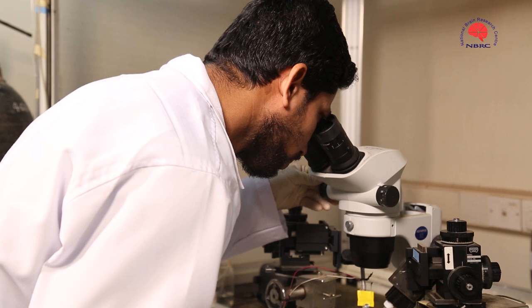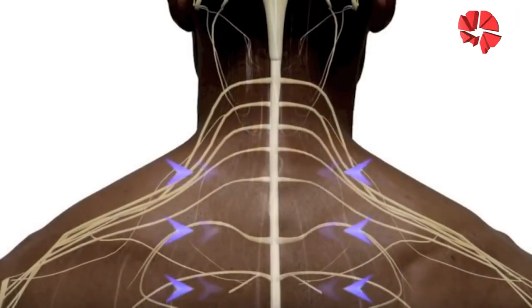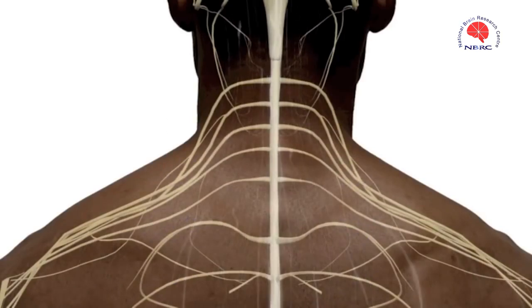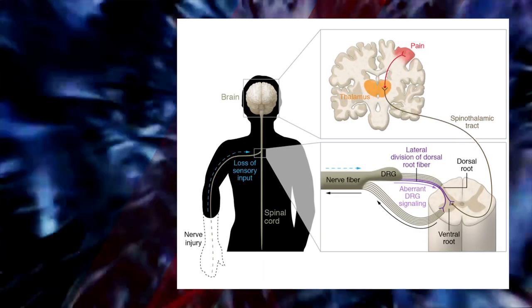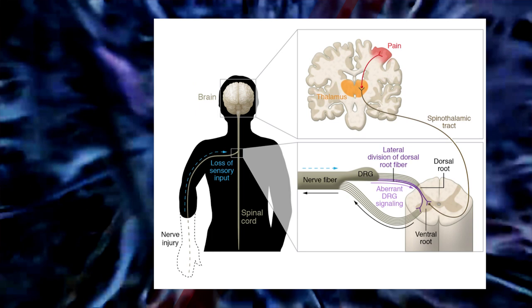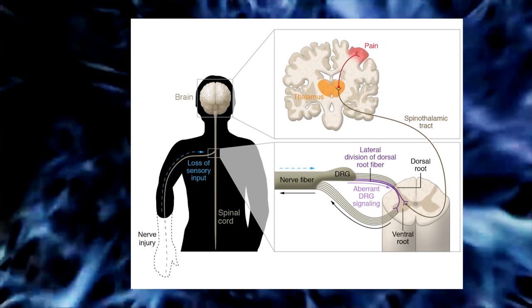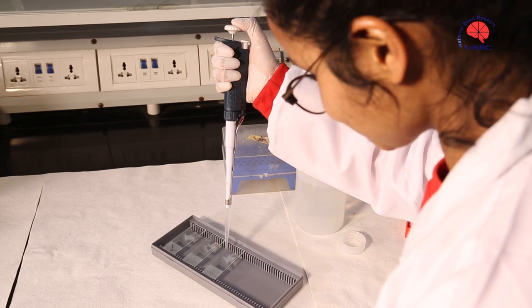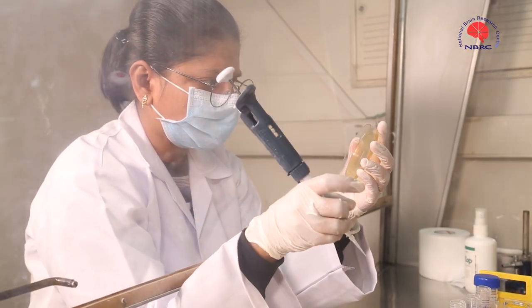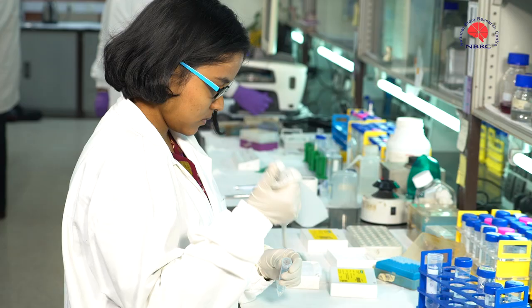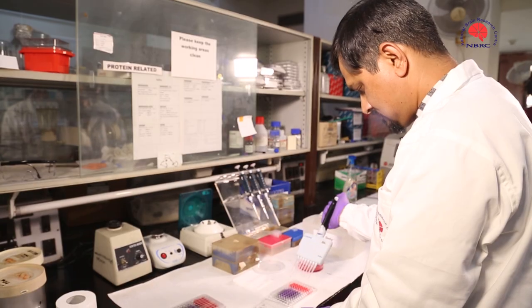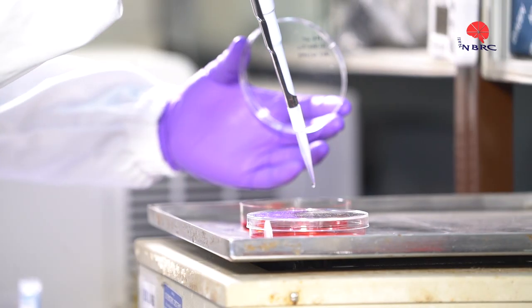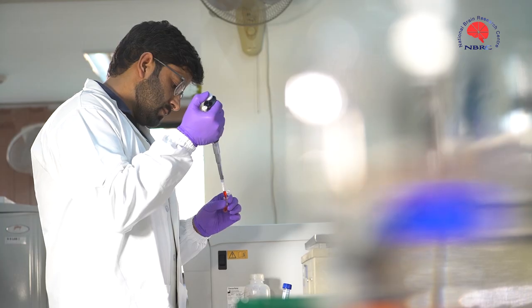NBRC has made tremendous progress in understanding how spinal cord injuries make the brain function abnormally which hampers recovery and causes abnormal sensations called phantom sensations. For repair and restoring function after spinal cord injury, NBRC scientists are studying worms to rodents to humans. The other unique feature of NBRC is the strong systems and cognitive neuroscience units.